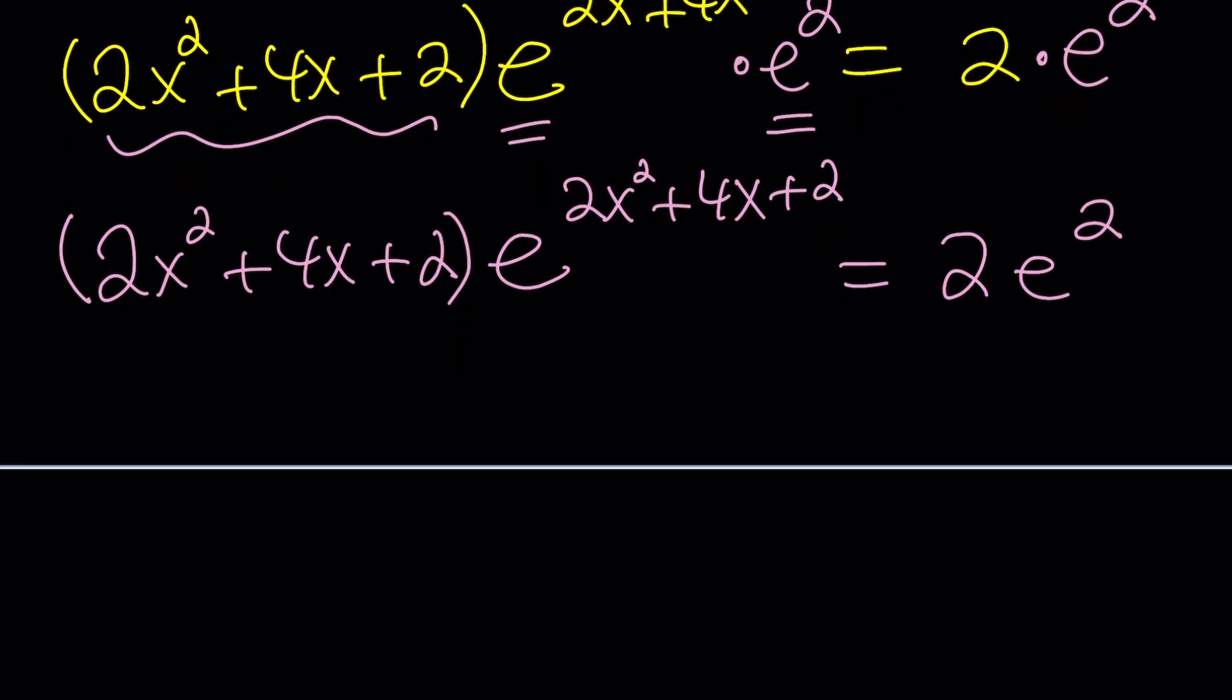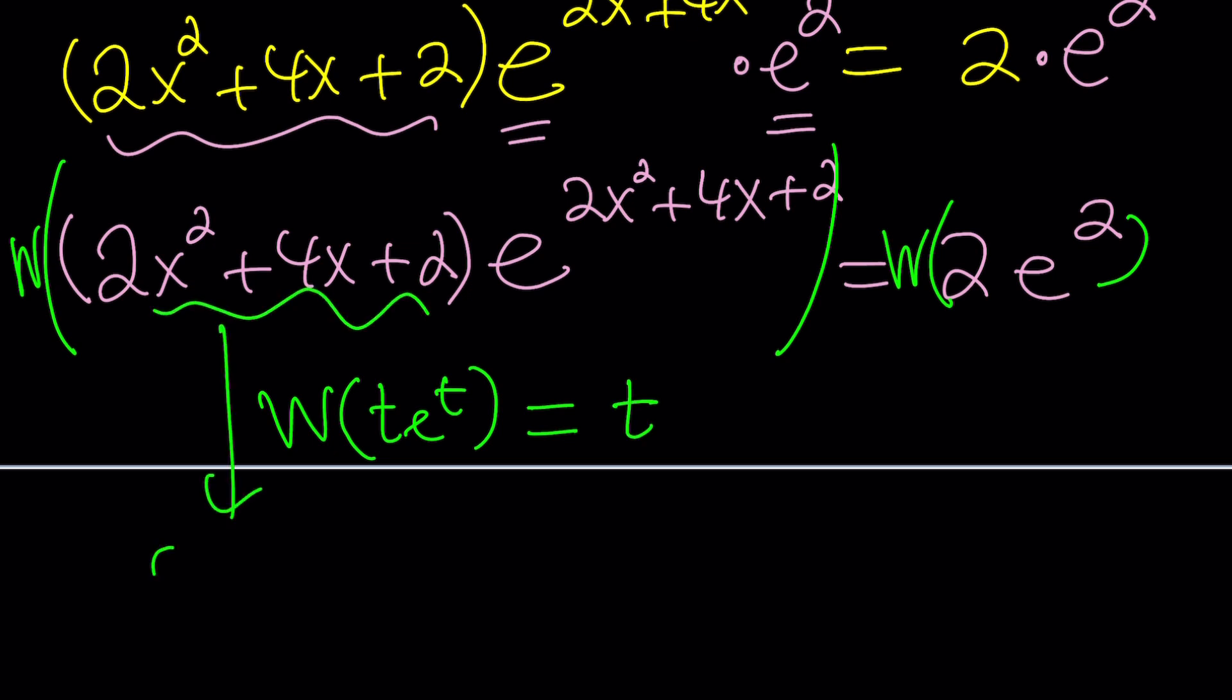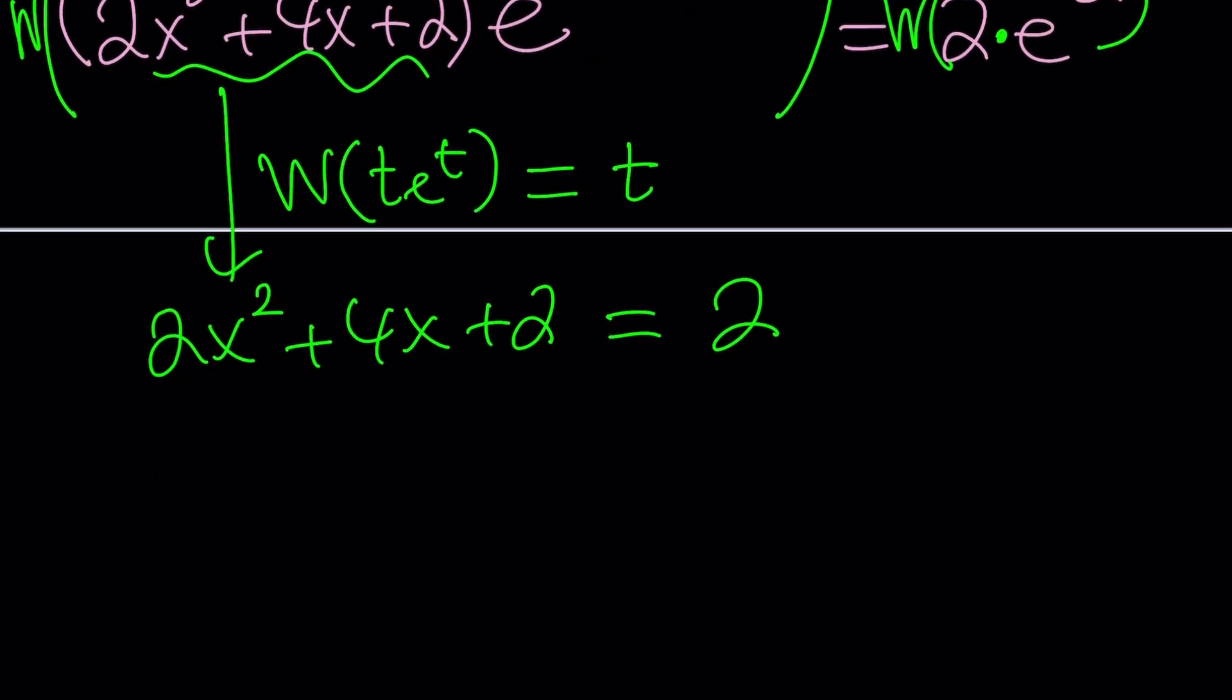The next step should be applying Lambert's W on both sides. So we're going to put a W here, a gigantic W, and a W here. And that should do the trick. But remember, the definition for Lambert's W function, one more time: if your input is t e to the t, then output will be as simple as t. So when you apply it here, you're going to get 2x squared plus 4x plus 2 from here. And when you apply it to 2e squared, you're going to get just the 2. How nice. We got rid of a really complicated product. And this is something simple. It's quadratic.